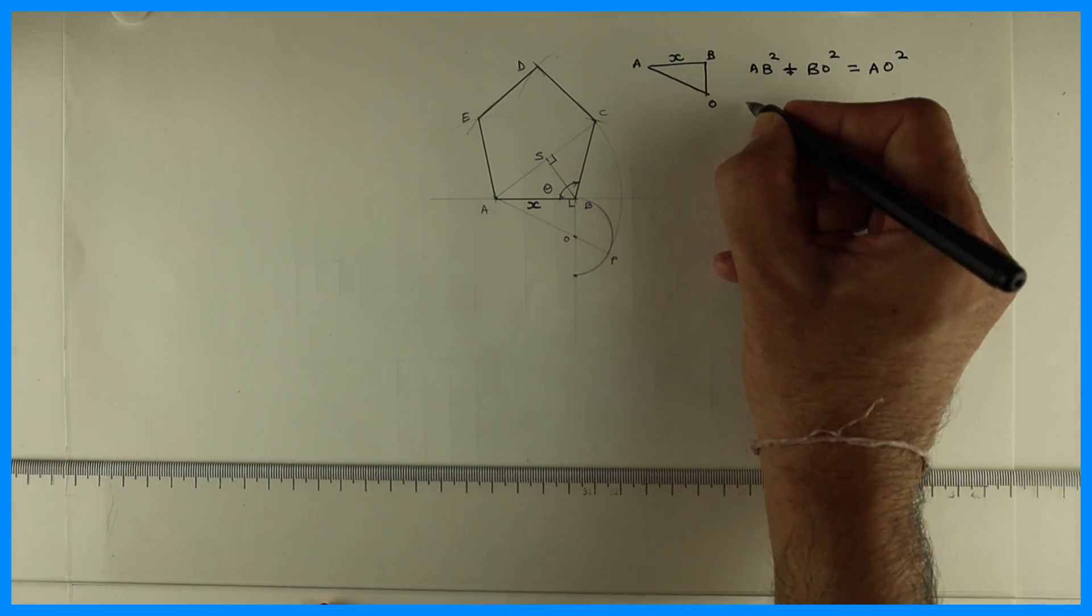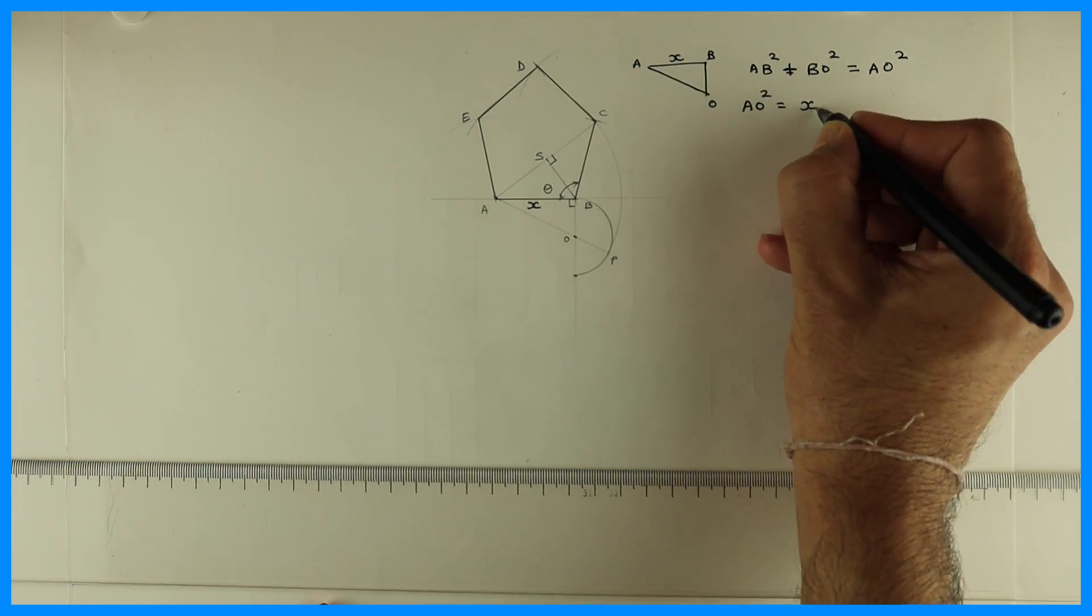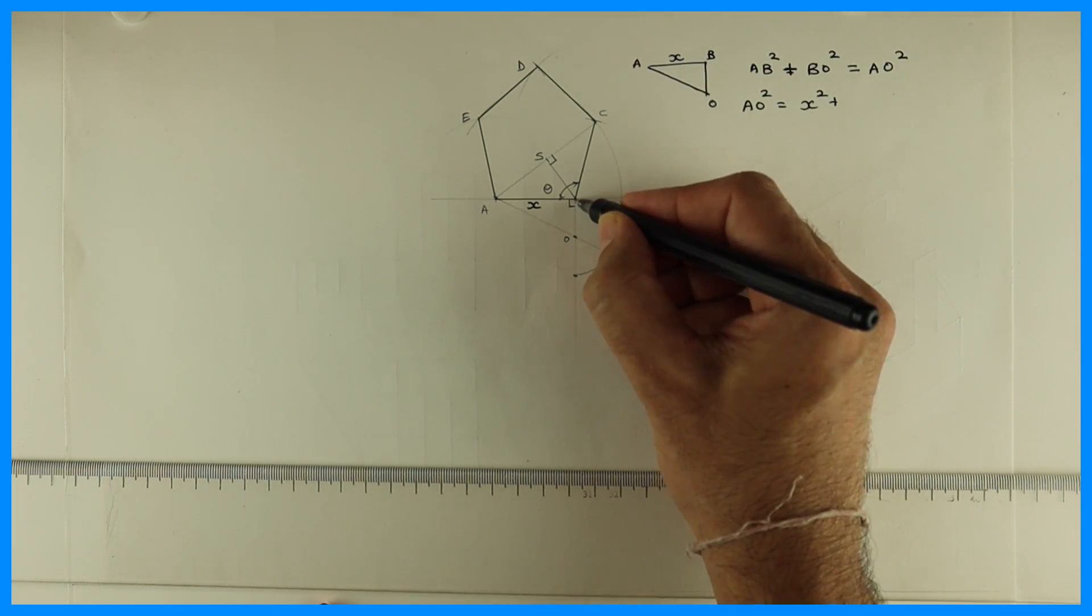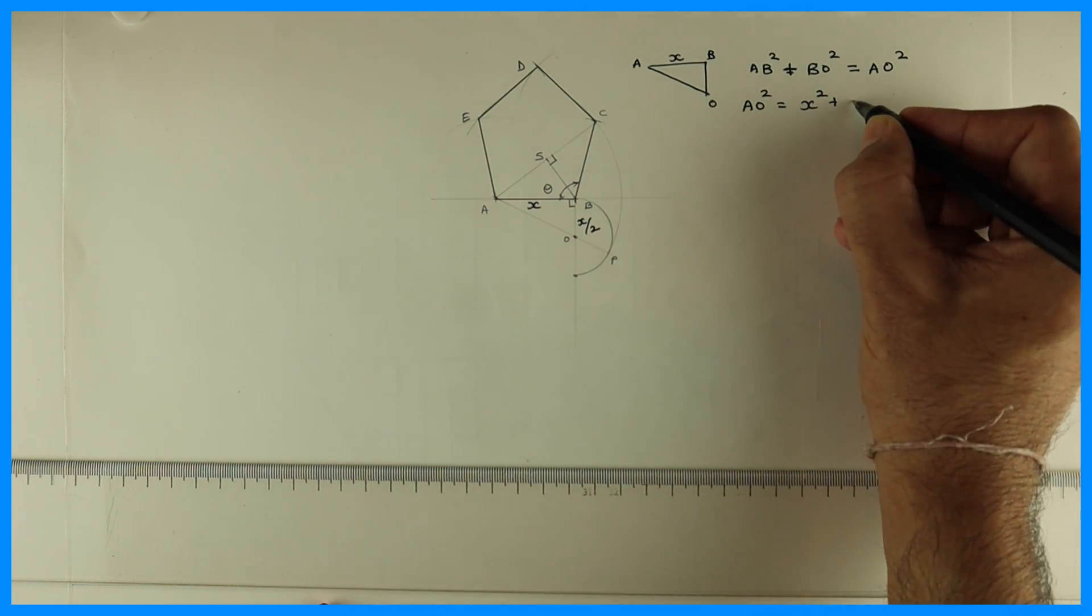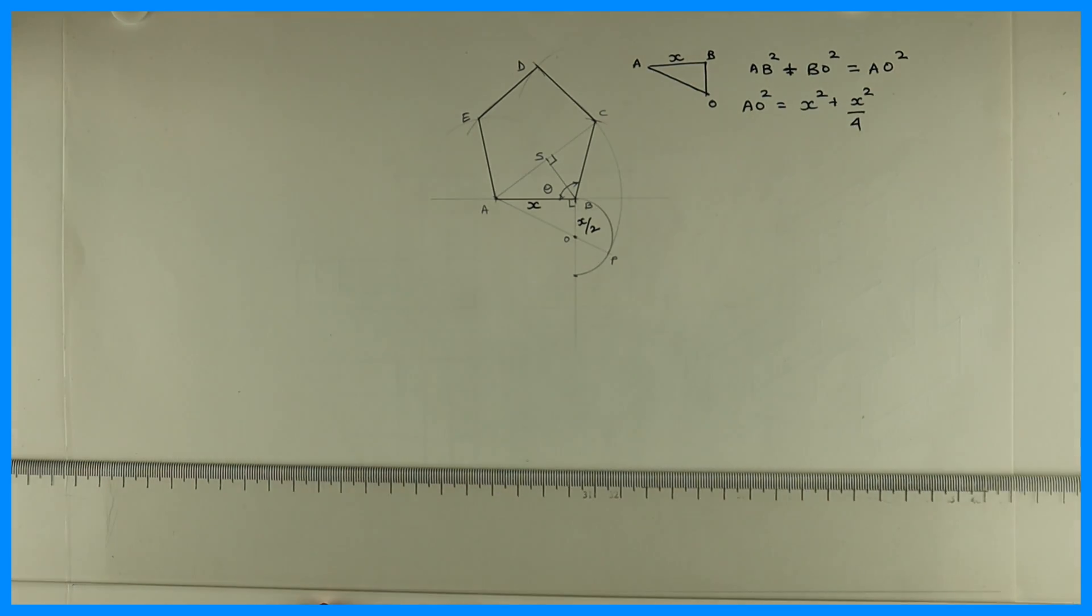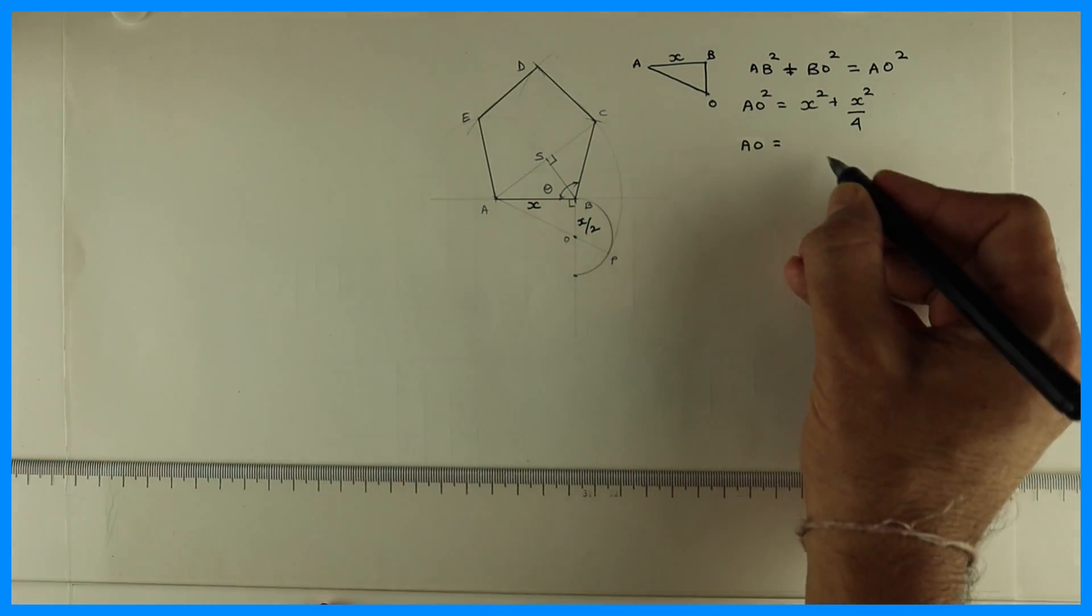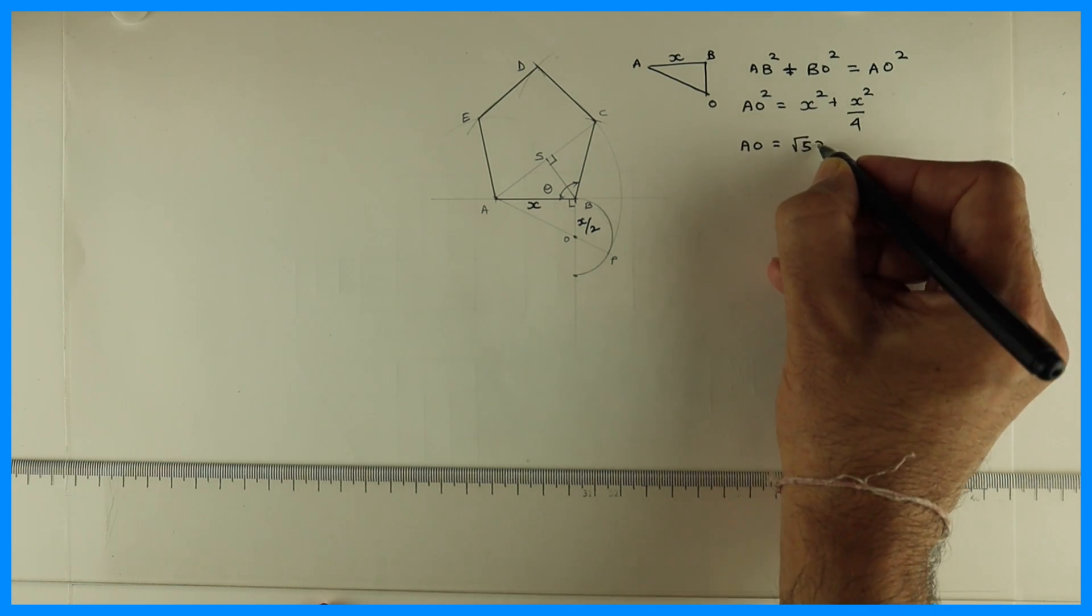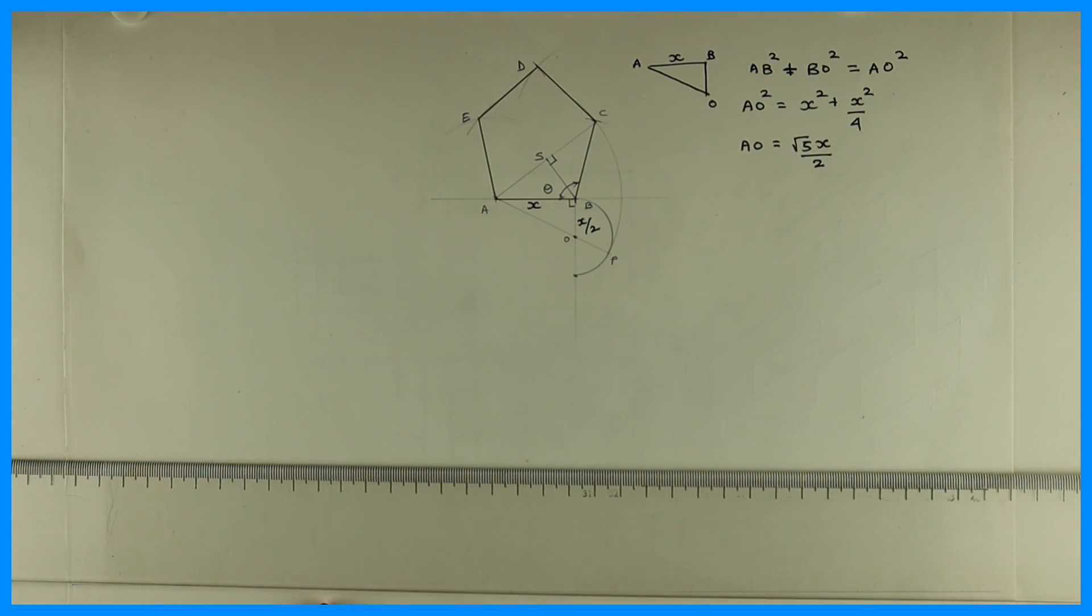So what is AO square? AO square is equal to AB square. AB is how much? X. X square. BO is how much? X by 2. Right. So this is X square by 4. Now when you solve this, AO would be under root 5 X by 2. This is the value of AO.